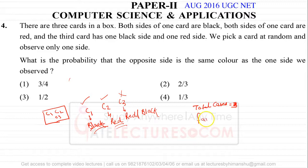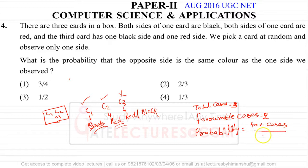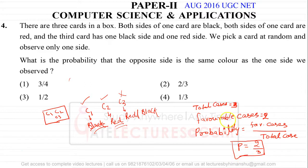Our favorable cases are equal to 2. Probability is favorable cases upon total cases. In this case, favorable cases are 2 and total cases are 3. So the answer is 2 by 3, which is option 2.